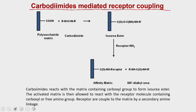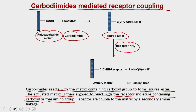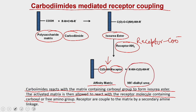The second is carbamide-mediated receptor coupling. Carbamide reagents react with the matrix containing carboxyl groups to form an isourea ester. The activated matrix is then allowed to react with the receptor molecule containing carboxyl or free amino groups. The polysaccharide matrix reacts with carbamide groups to form an isourea ester, which then reacts with the receptor containing primary amine or carboxyl groups, resulting in coupling of the receptor to the matrix by a secondary amine linkage, making your affinity matrix ready.